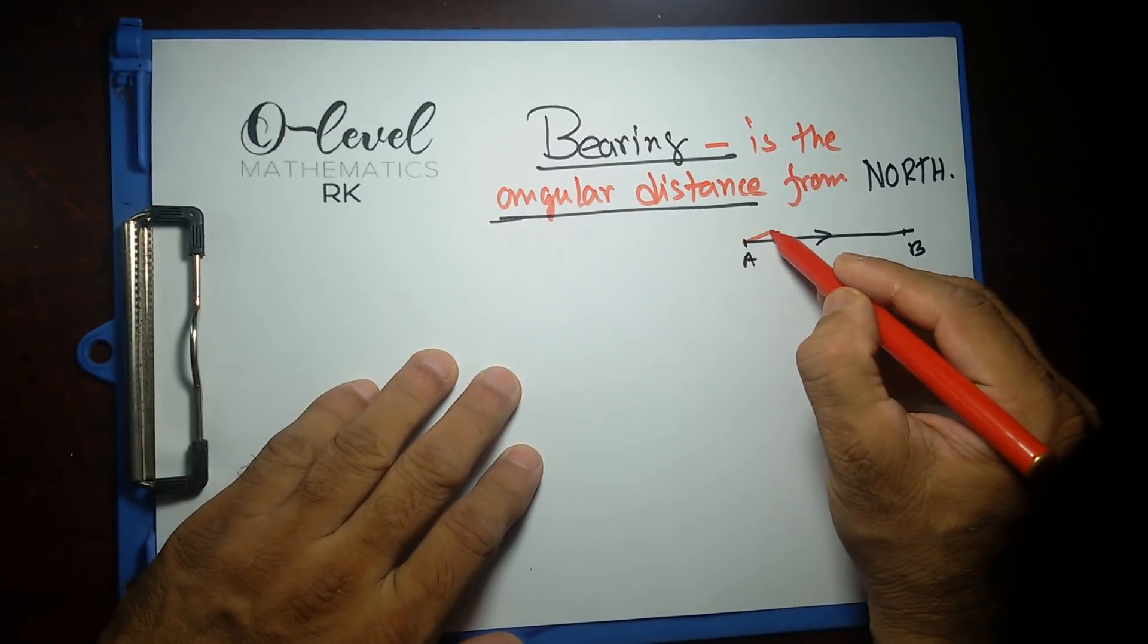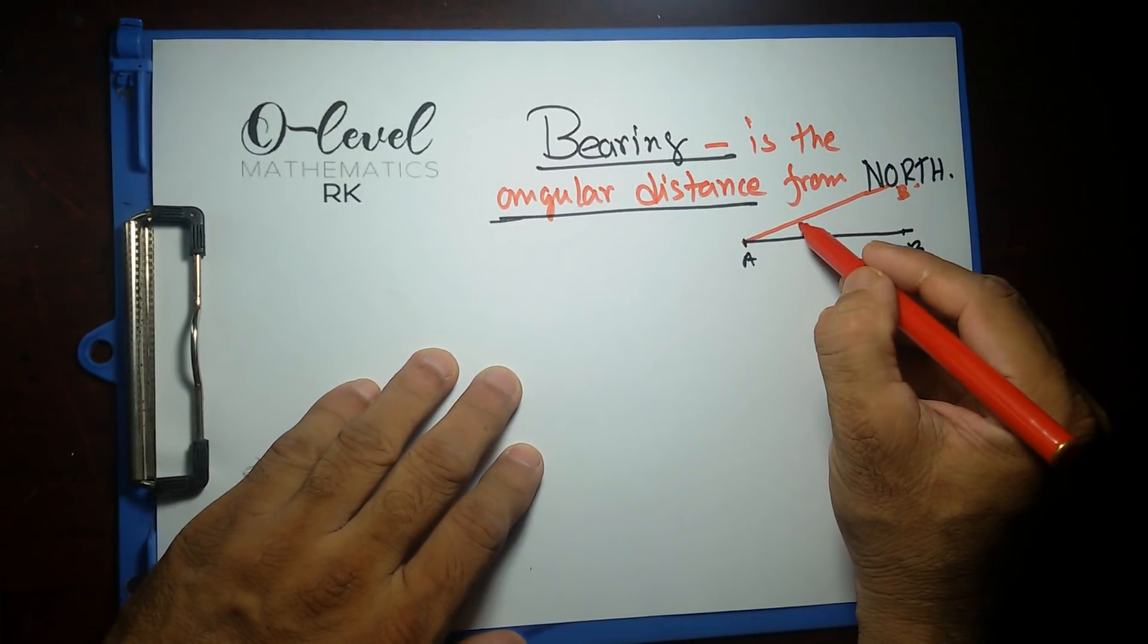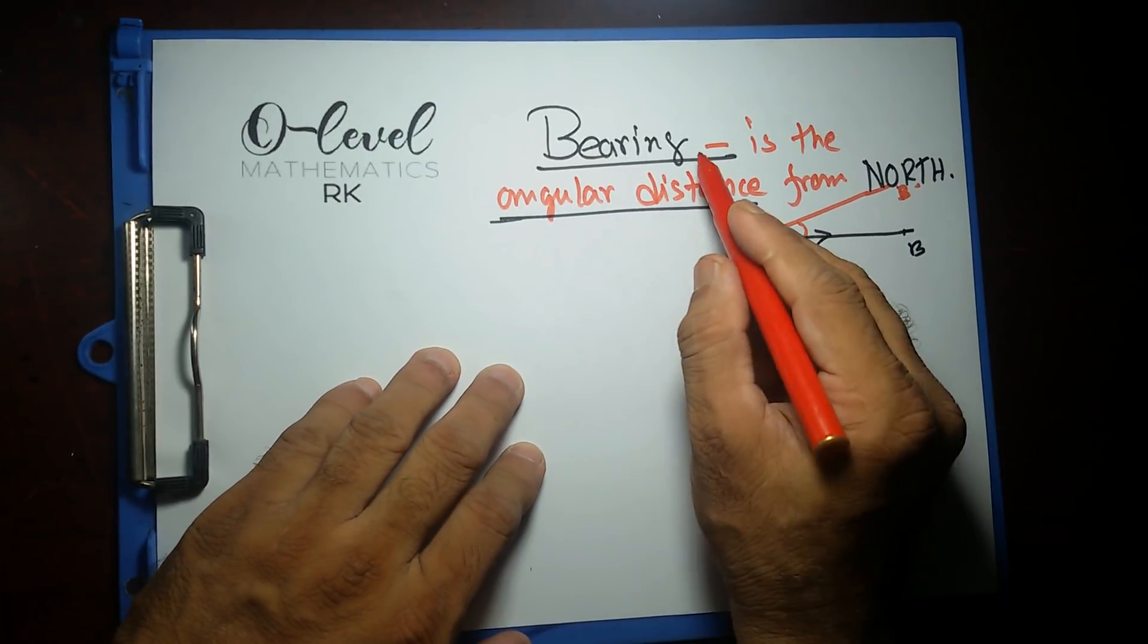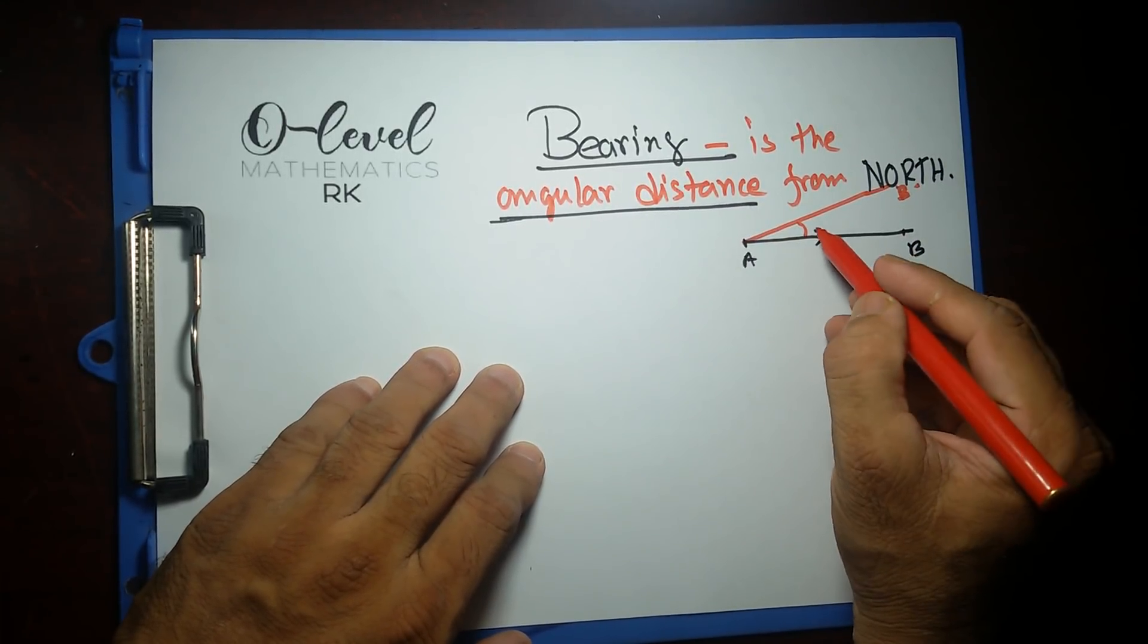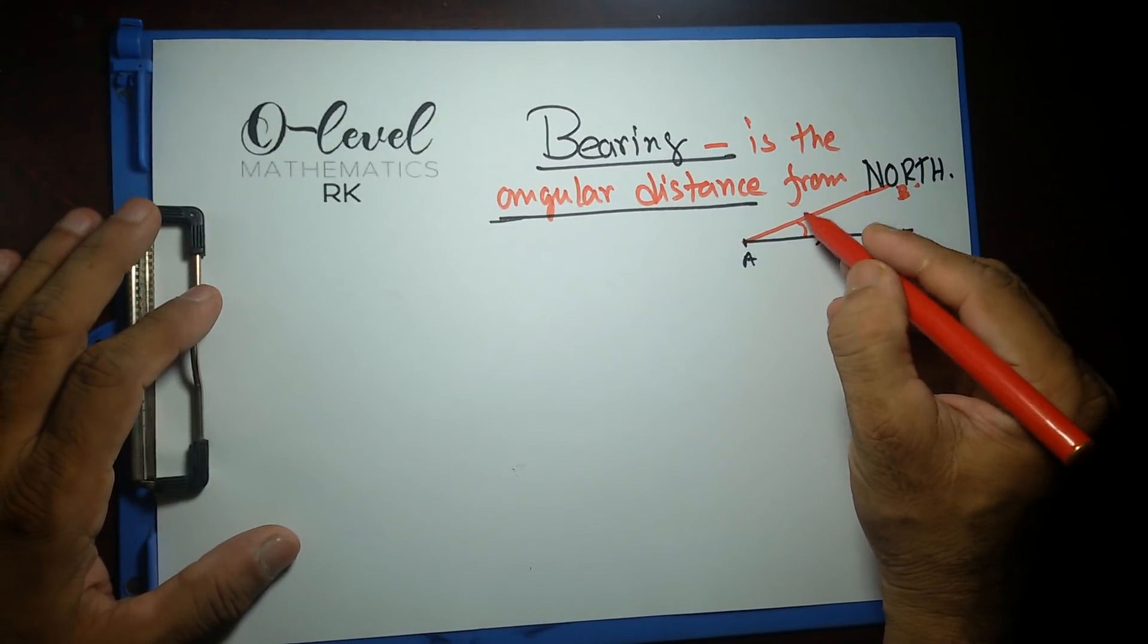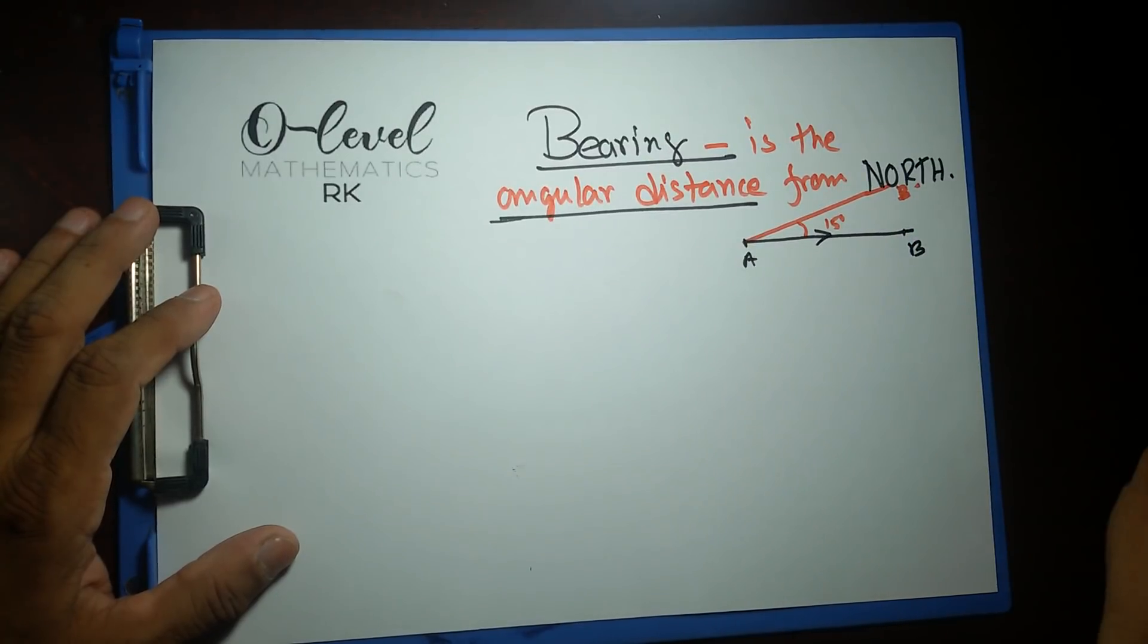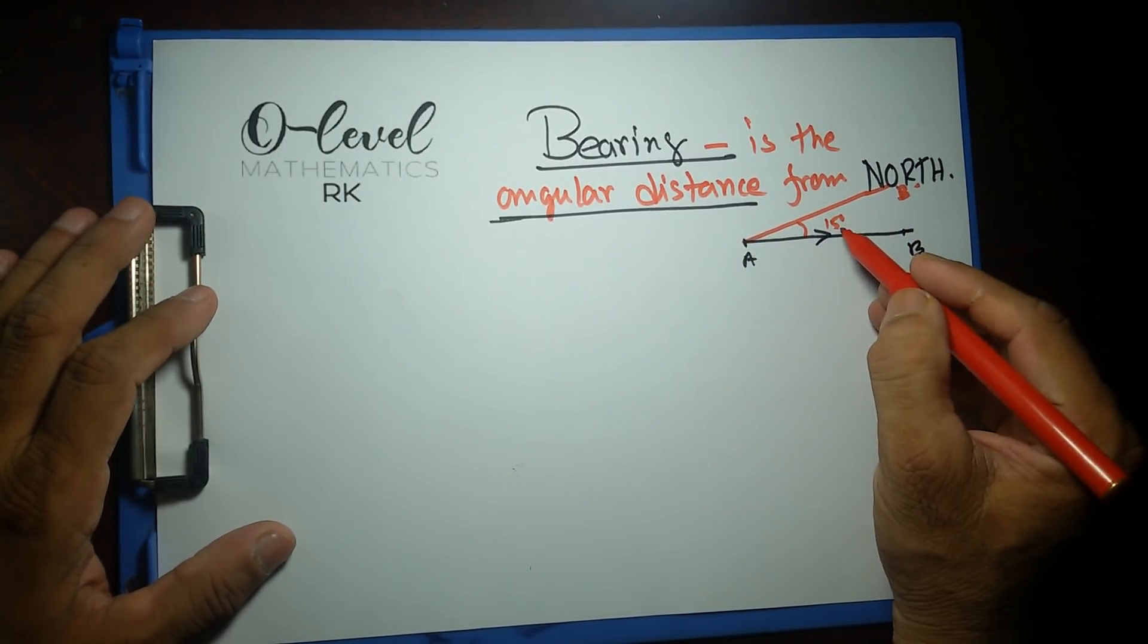When it's moved this way, let's say the new position of B is somewhere over here, B prime. So this angle it makes, that's our angular movement or angular distance. It might be any angle. Right now the way I've drawn it, it's an acute angle, most probably 15 degrees. This is known as angular distance.